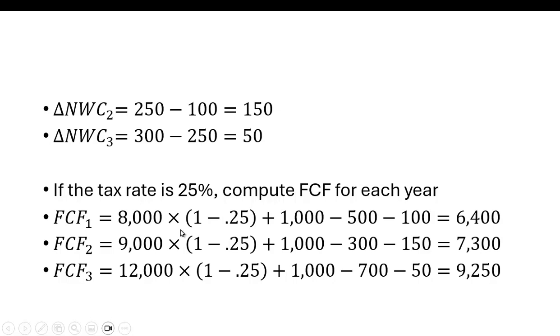So using the formula we have, we can now calculate free cash flow for each of these three years. So EBIT times one minus the tax rate, plus the depreciation, minus the capital expenditure, minus any change in net working capital. And if you do the math, you get 6,400 here for year one, you get 7,300 for year two, and you get 9,250 for year three. So now that you have the free cash flows, we might like to use this to value the firm.